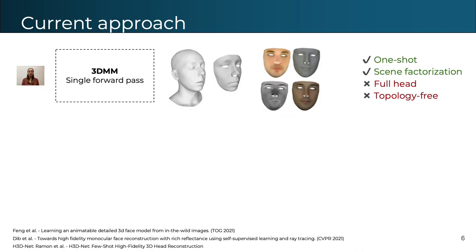Current few-shot methods for reconstructing human heads are based on architectures composed of large convolutional neural networks in combination with 3D morphological models. These methods are trained on a large set of images and lead to systems that are very robust in the one-shot scenario, predicting plausible shape and texture, including albedo and specular components. However, they tend to be constrained on the data seen in the prior, which may limit expressiveness.